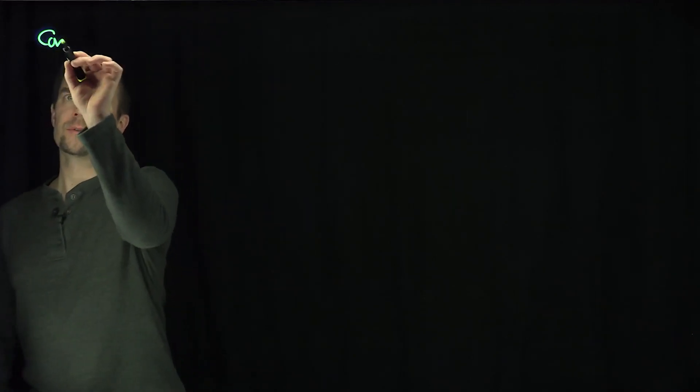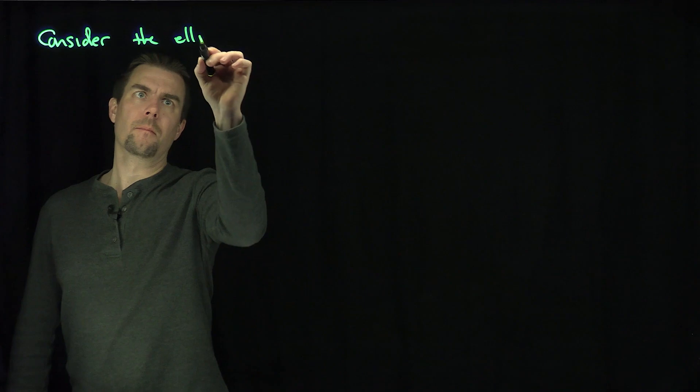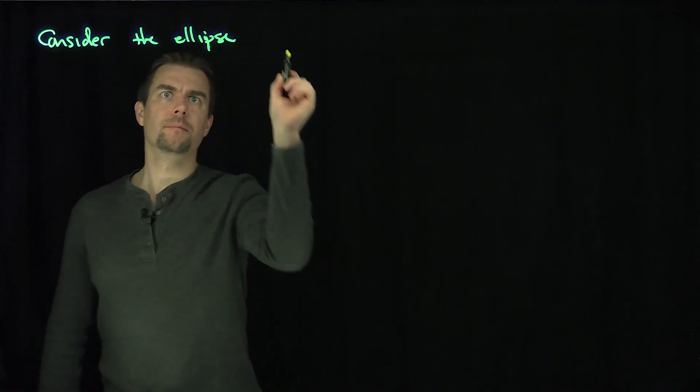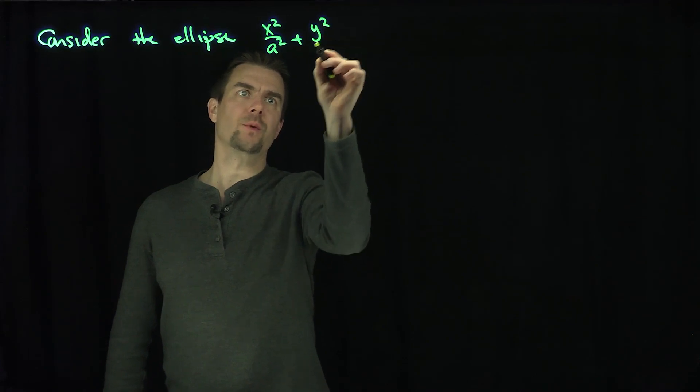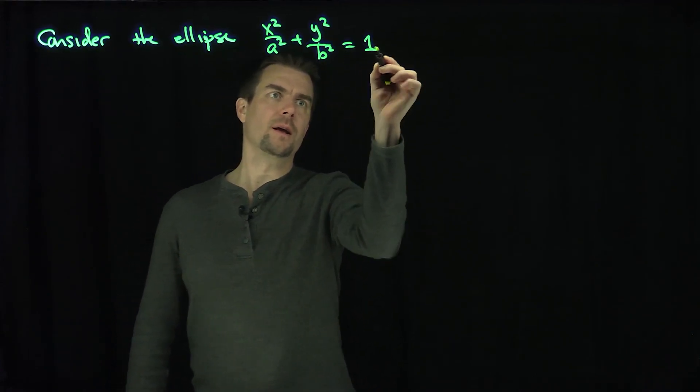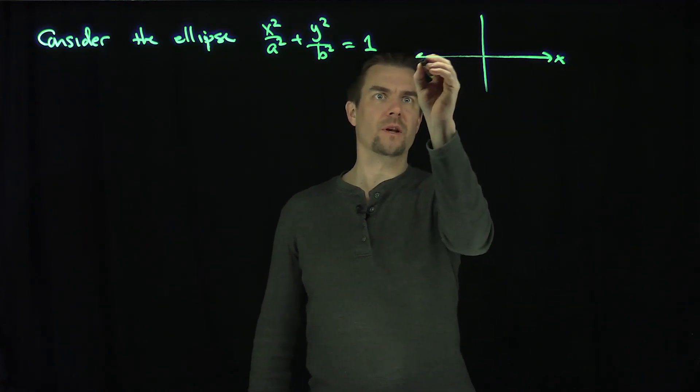Let's consider, for example, the ellipse x squared over a squared plus y squared over b squared is equal to 1. So we have a standard ellipse. That's the standard form of an ellipse.